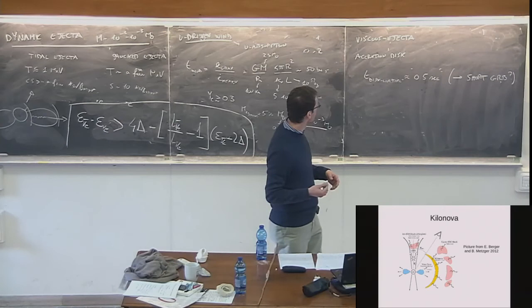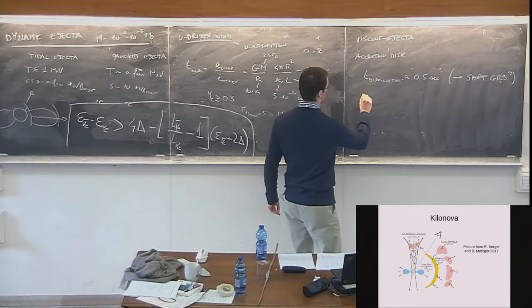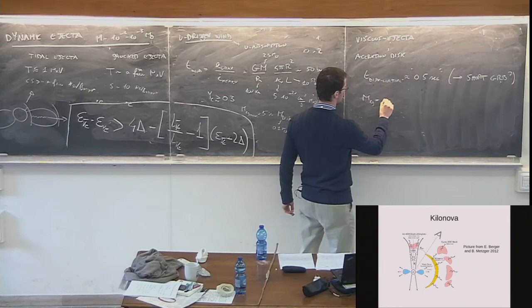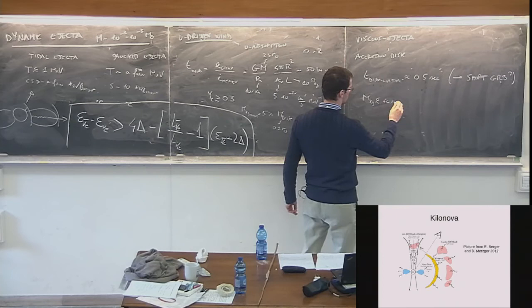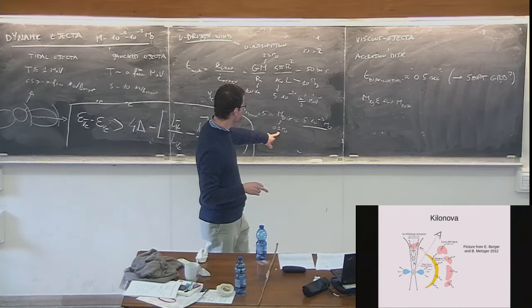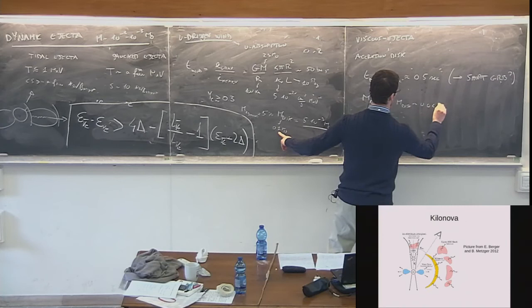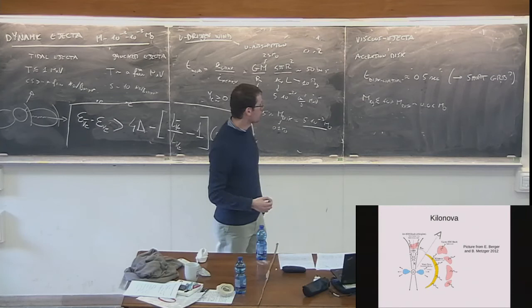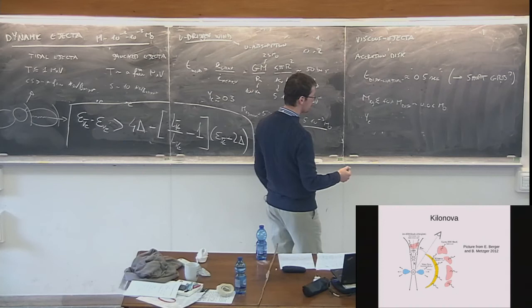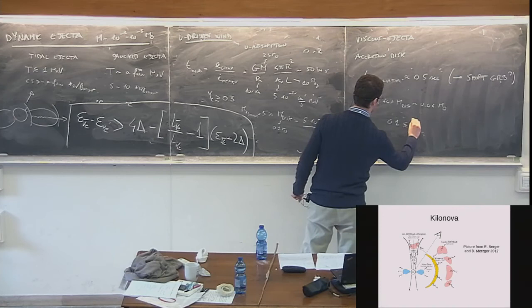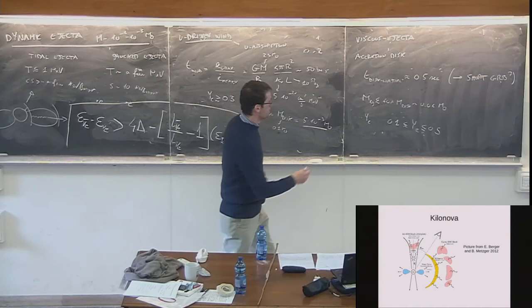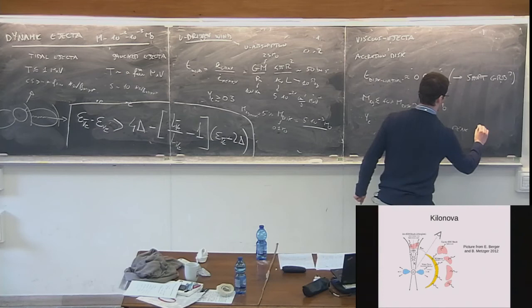With a disk of 0.1 solar masses, ejecting 40% gives ~0.04 solar masses — this is definitely the largest contributor to the total ejecta. The electron fraction from viscous ejecta covers a broad range according to simulations, with a peak around 0.22, though this is not fully under control. The important point is that it spans a very broad range of values.